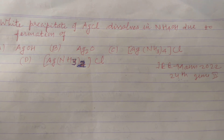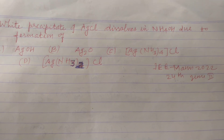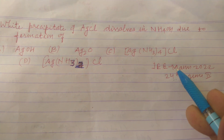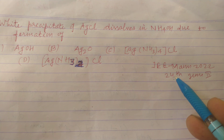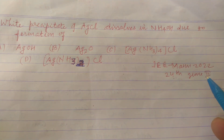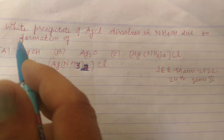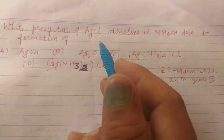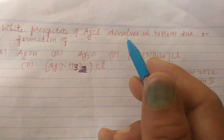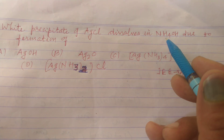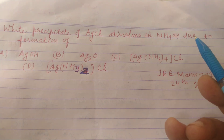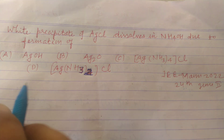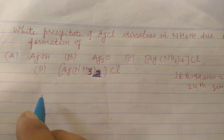Hello students, welcome to this YouTube channel. Here is a question from JEE May 2022, 24 June 6th. Why does the precipitate of AgCl dissolve in NH4OH due to the formation of which compound?